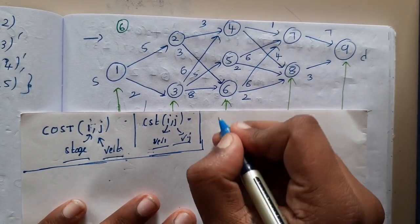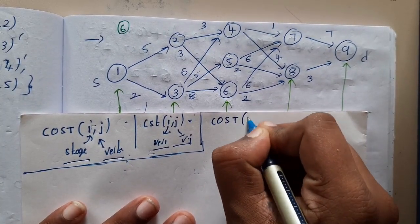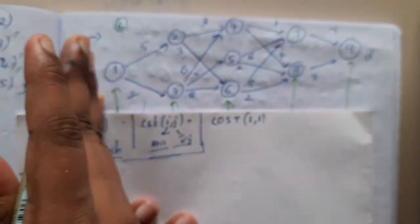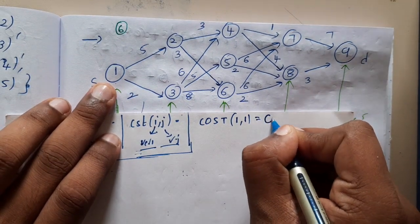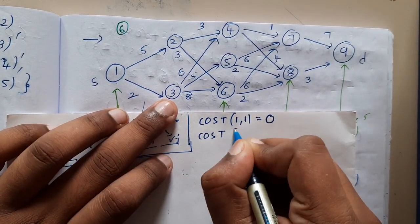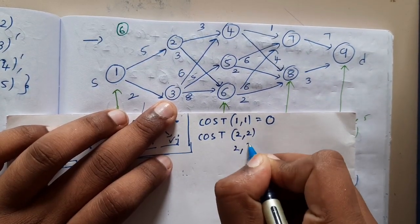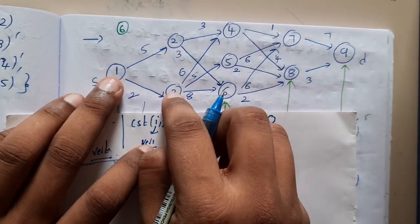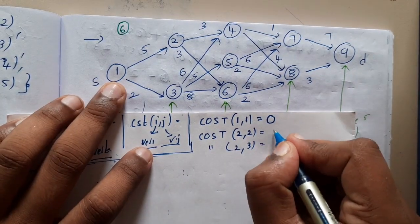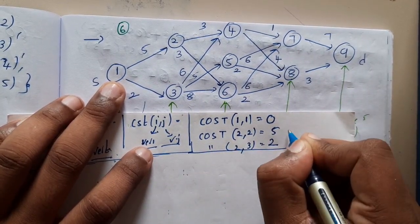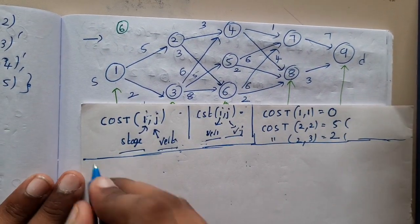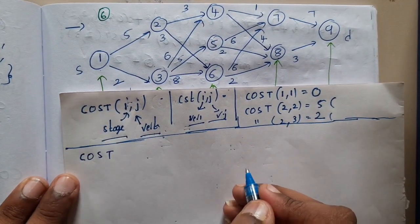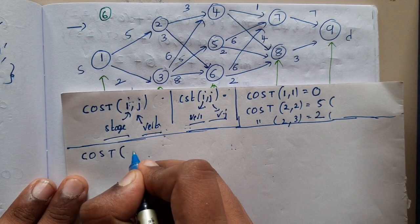So cost at stage one, vertex one — since this is the backward approach we start from the first stage. The cost from itself to itself is always zero. Cost at stage two, vertex two is five, and cost at stage two, vertex three is two. These are direct paths so there is nothing to solve — you can directly write the values.